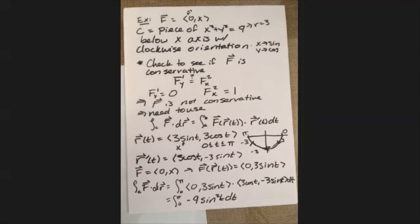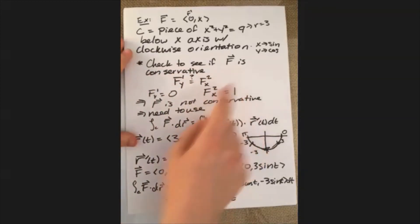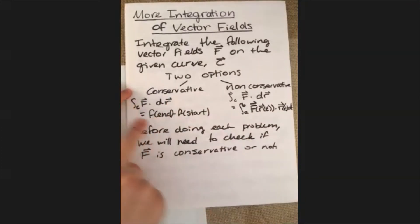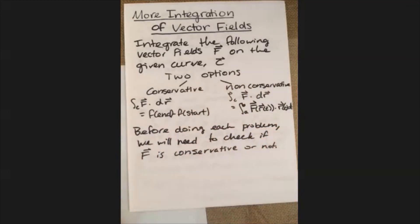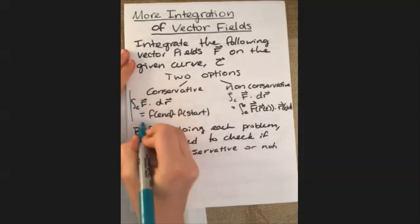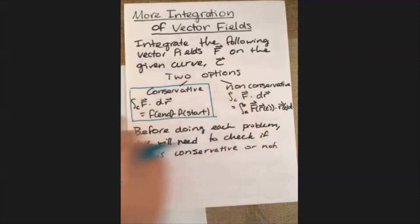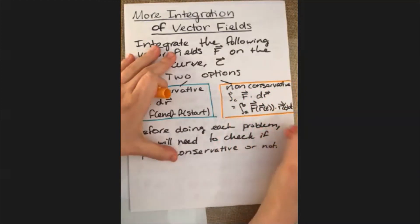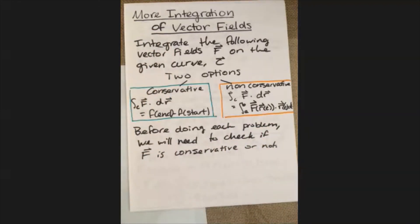That's just a couple of quick examples for integrating vector fields when you haven't been told whether the field is conservative or not. The big idea is to always check beforehand so you know which formula is appropriate: if it's conservative, apply the fundamental theorem of line integrals; if it's not conservative, use the parameterization and dot product approach. Always check beforehand so you know what you're working with.